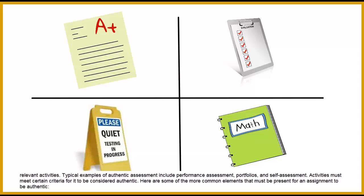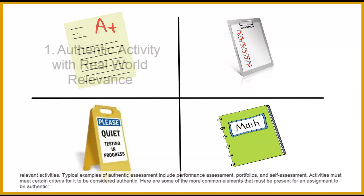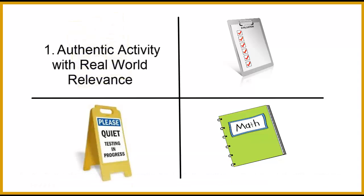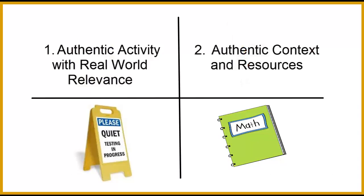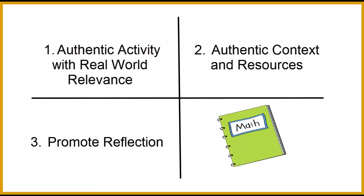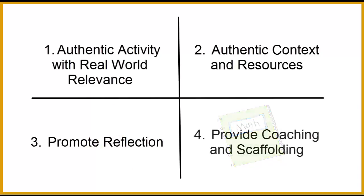Activities must meet certain criteria for it to be considered authentic. Here are some of the more common elements that must be present for an assignment to be authentic. First, authentic activity with real-world relevance. Next, authentic context and resources. Third, promote reflection. Fourth, provide coaching and scaffolding.